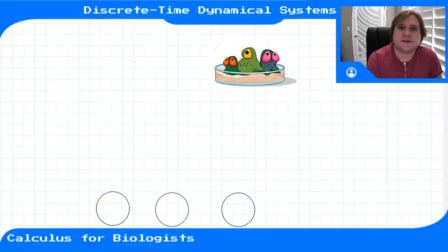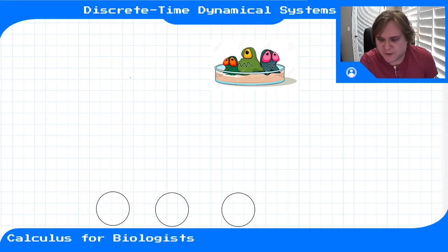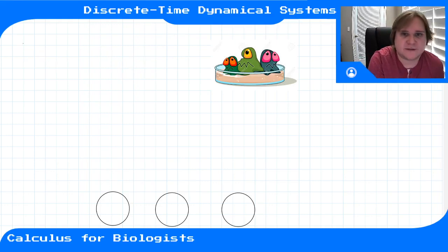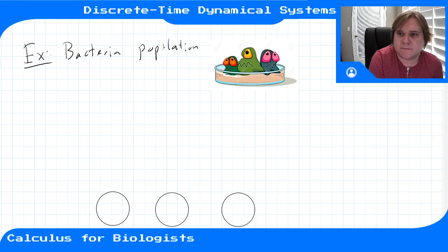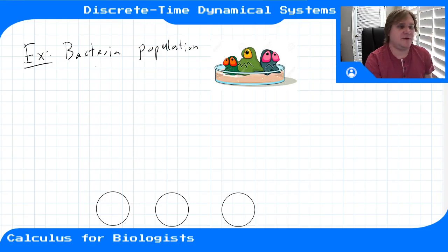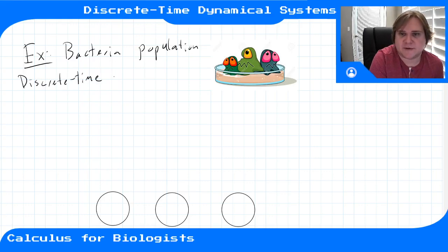Now that we've introduced what a discrete time dynamical system is and where it comes from, we can manipulate these sorts of models to answer lots of different questions. Let's start with an example I've used a couple of times — this bacteria population growing in a petri dish. We can model this with a discrete time dynamical system.